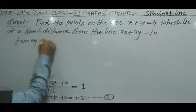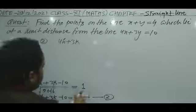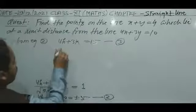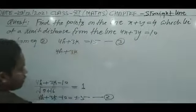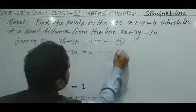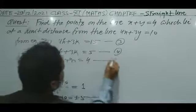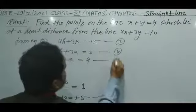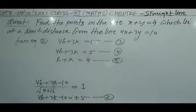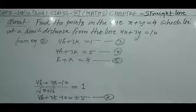From equation 2, when you take the positive sign, 4H plus 3K equals 15 — consider this equation 3. When you take the negative sign, 4H plus 3K equals 5 — consider this equation 4. Equation 1 is H plus K equal to 4, considered equation 5. Solving equation 3 and 5 together, and equation 4 and 5 together, gives the values of H and K.